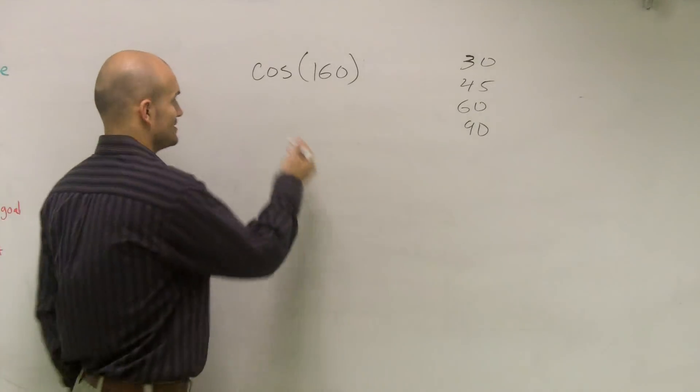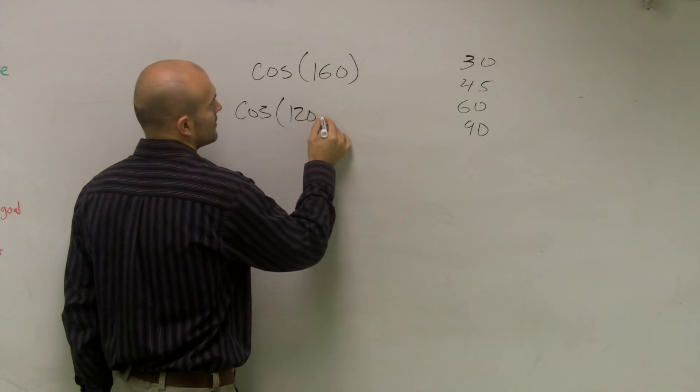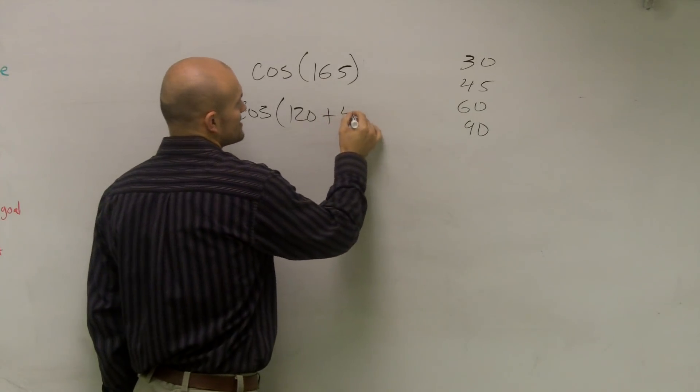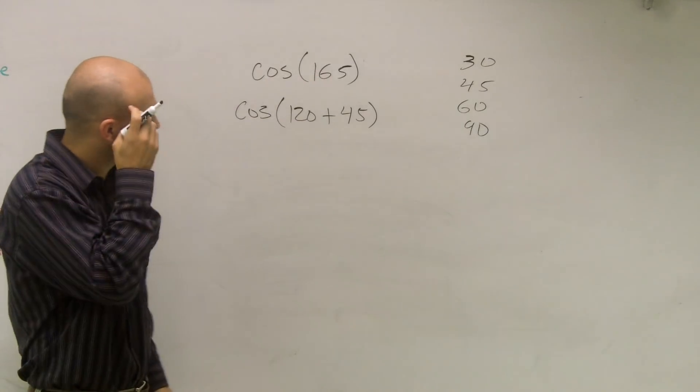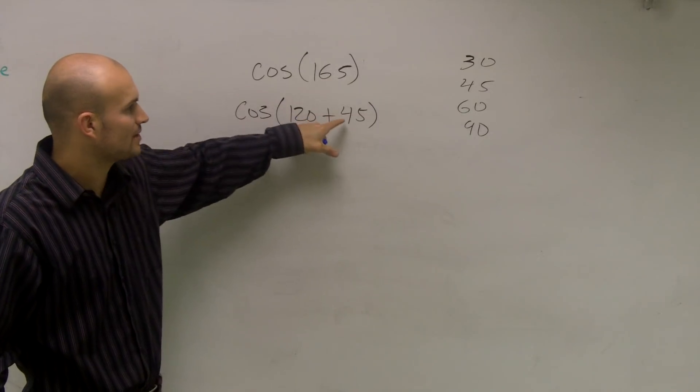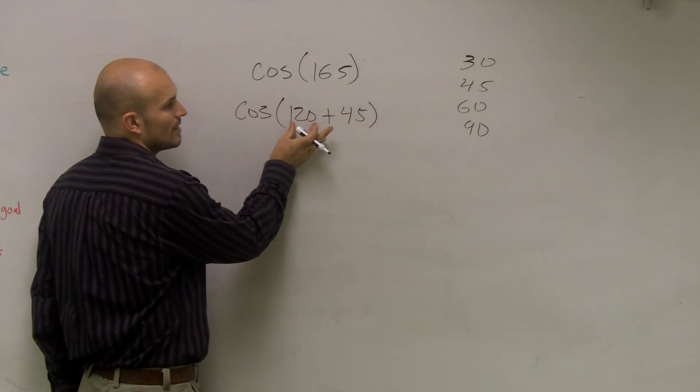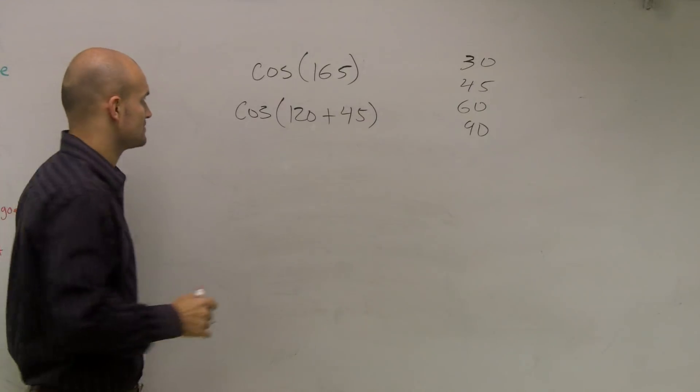And what we look at is cosine, we could say of 120 - oh, that was 165, isn't it? Yep. So it's 120 plus 45 degrees. Sorry, I wrote down the problem wrong. It was cosine of 165. So therefore, I can rewrite that as 120 plus 45 degrees, because now I know I can figure out what 120 is on the unit circle, and I can figure out what 45 degrees is.